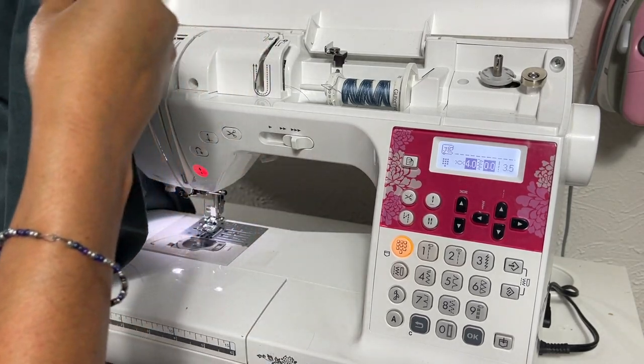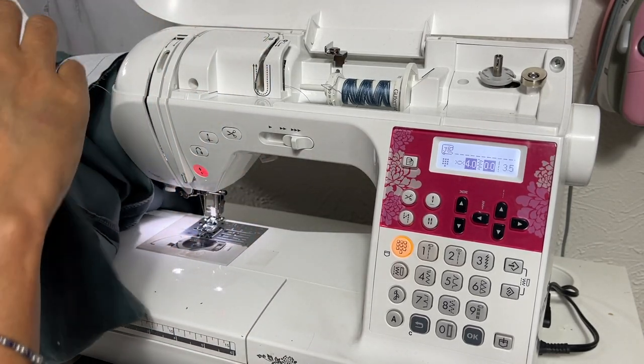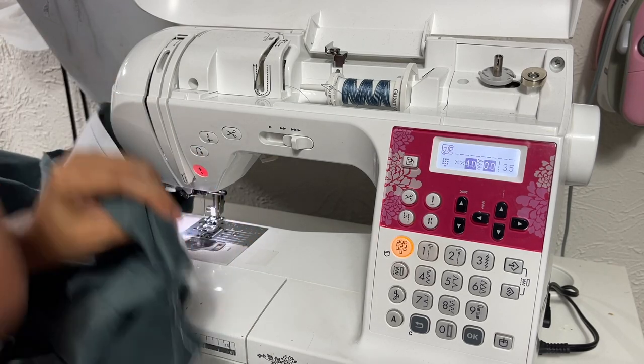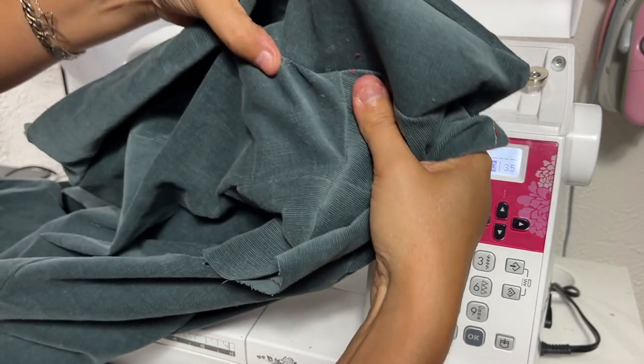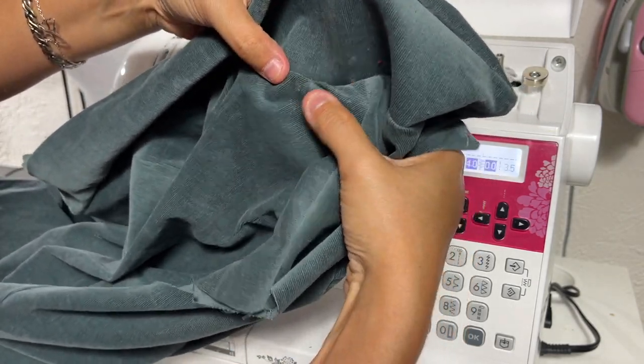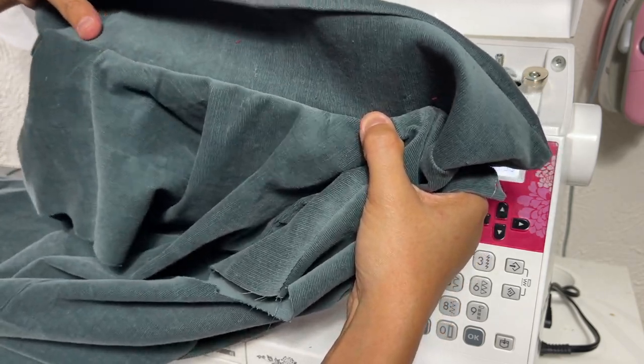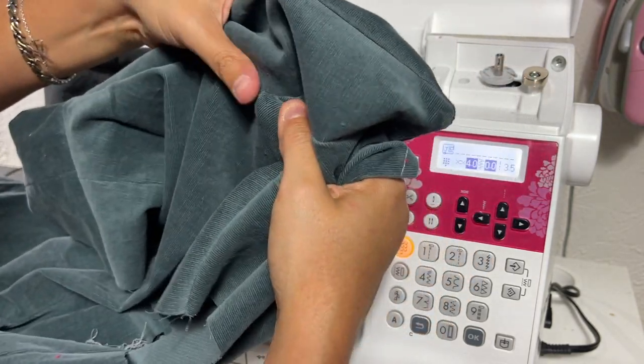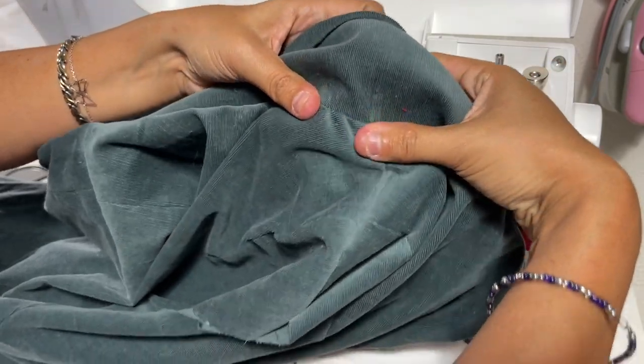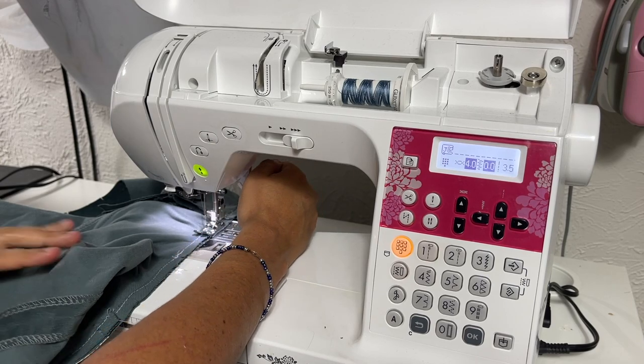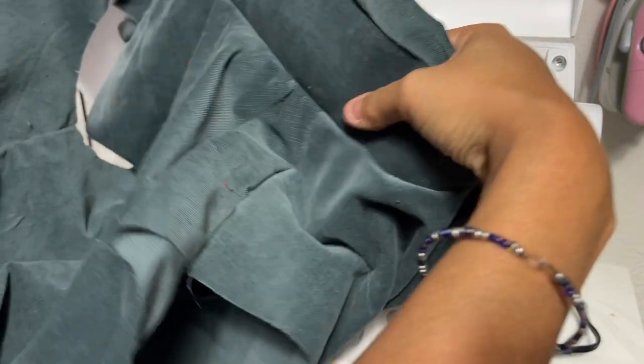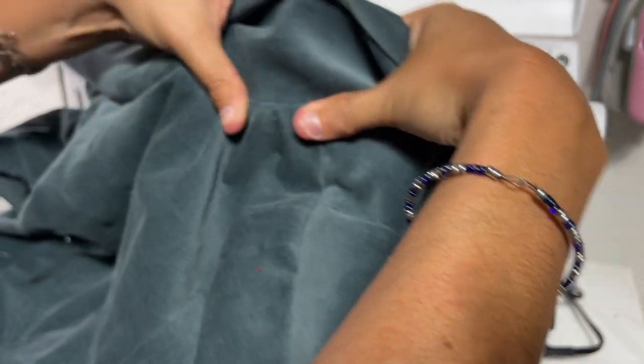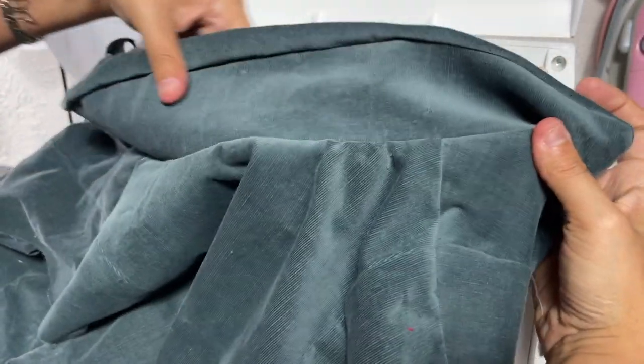At this point you want to see how you did. Make sure you didn't get any wrinkles or bubbles. There's a very small baby one there that might come out with the iron. When you go and press, all of that will go away.